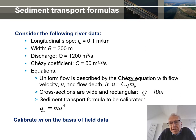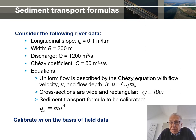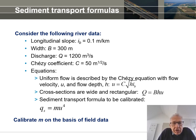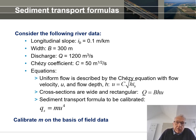The Chezy coefficient c and slope ib are used. We assume cross sections are wide and rectangular, so that the discharge equals width times depth times flow velocity. We have a sediment transport formula: qs = m · u^4. This formula is to be calibrated, meaning we are going to calibrate m on the basis of field data.